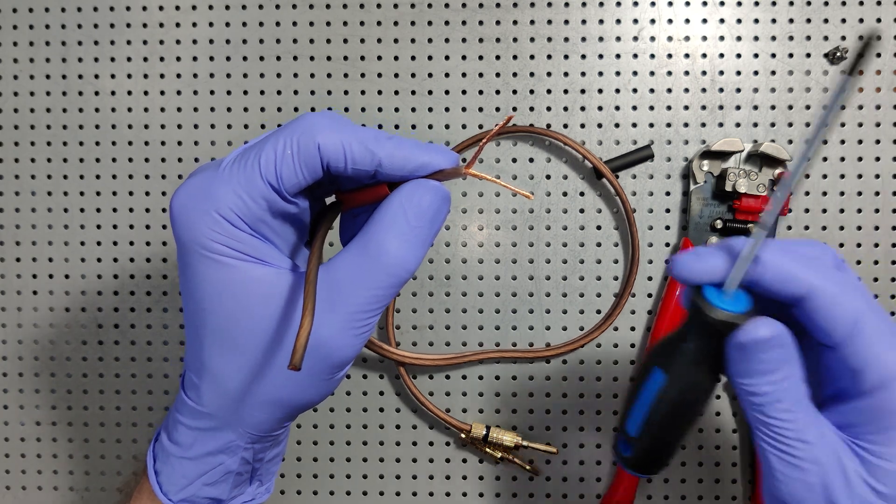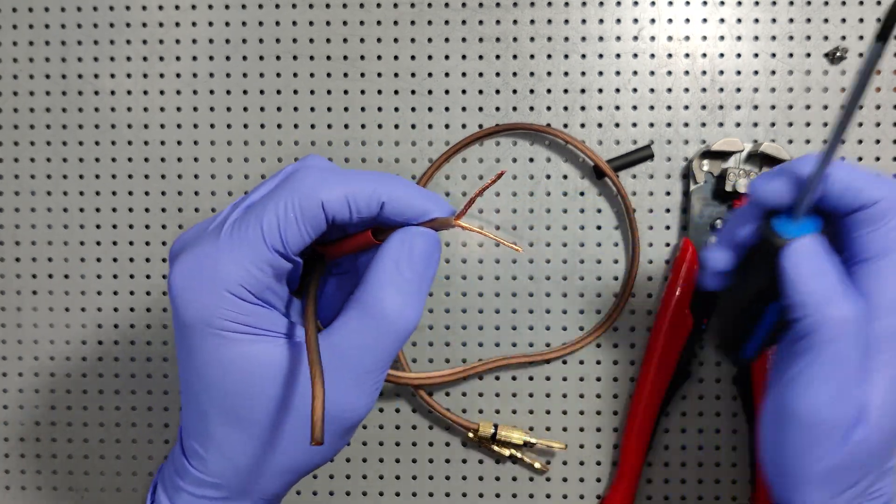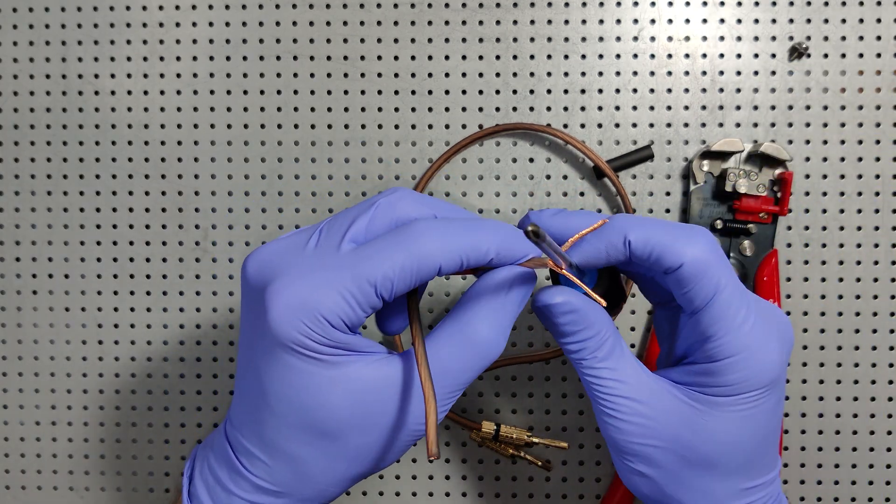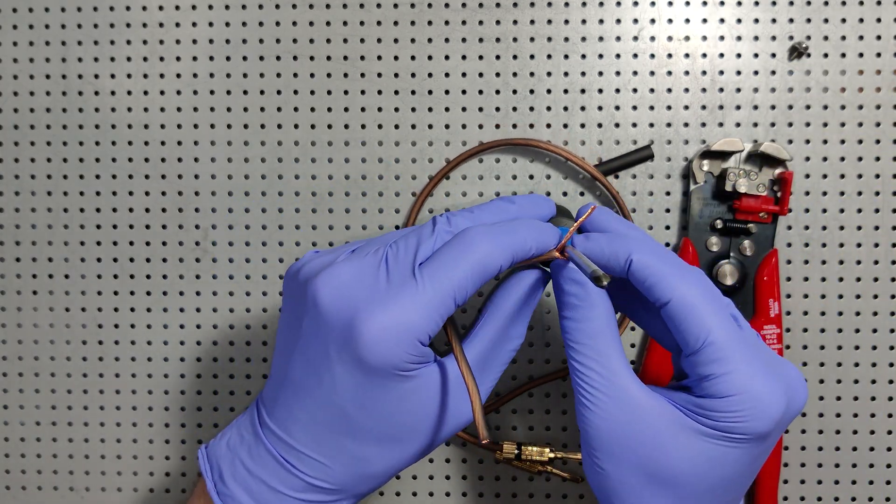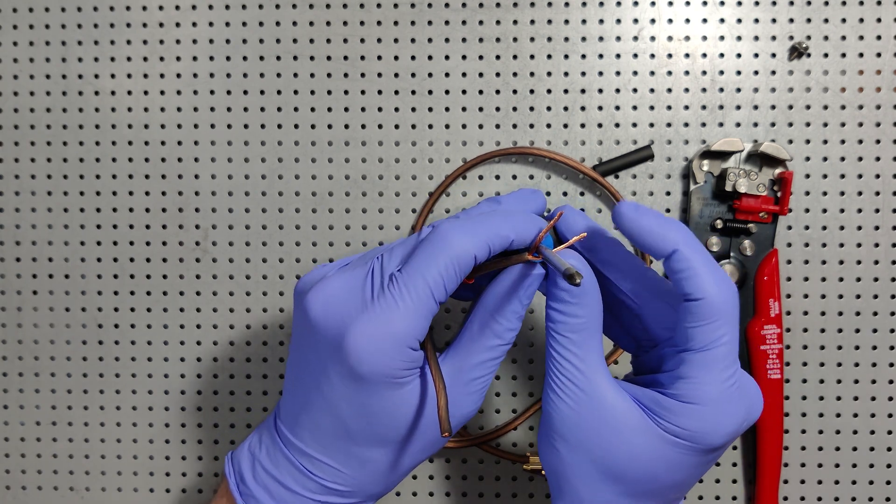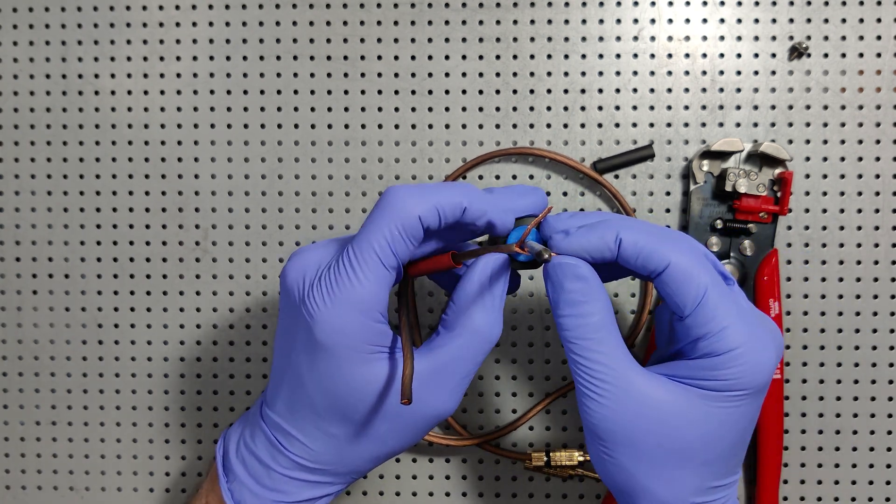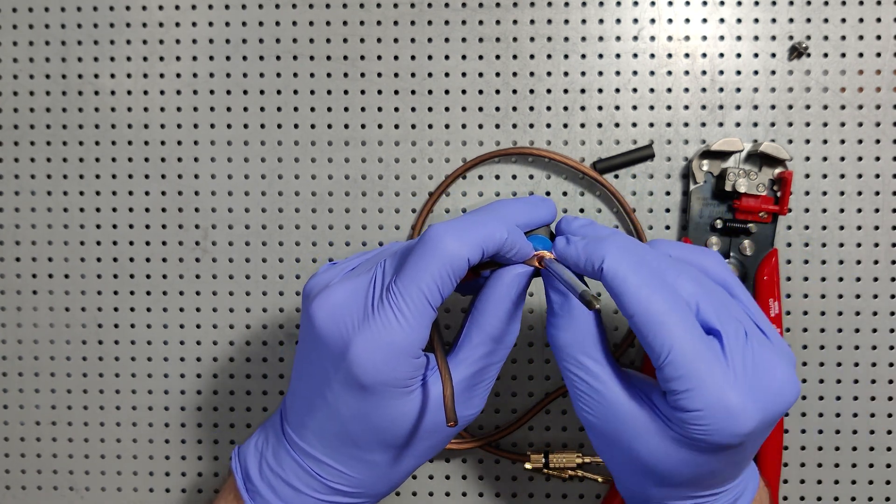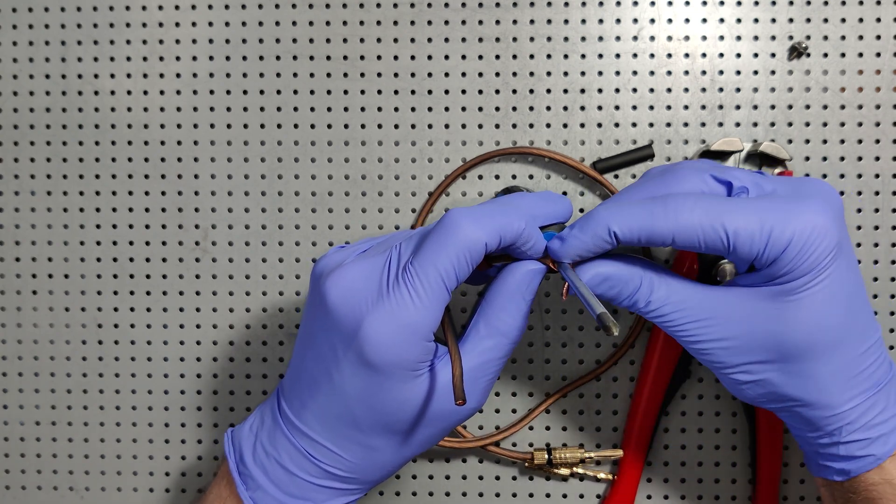Now I'm going to take my screwdriver which is the same thickness as this exact screw that I'm going to be using. And I'm going to use my screwdriver to wrap the cable around itself like so. And now the other side.